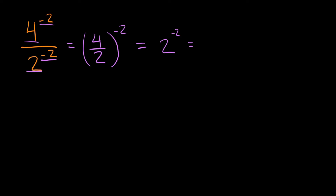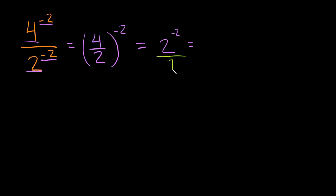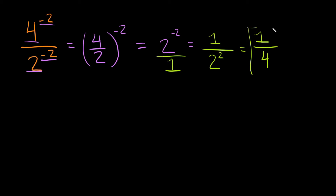To deal with a negative exponent, we flip our fraction. Right now it's in the numerator, but we can write it as a fraction over 1, then flip it and make the exponent positive. So we write this as 1 over 2 to the positive 2. We have 1 on top and 2 squared — which is 4 — on the bottom, so the answer is one-fourth.